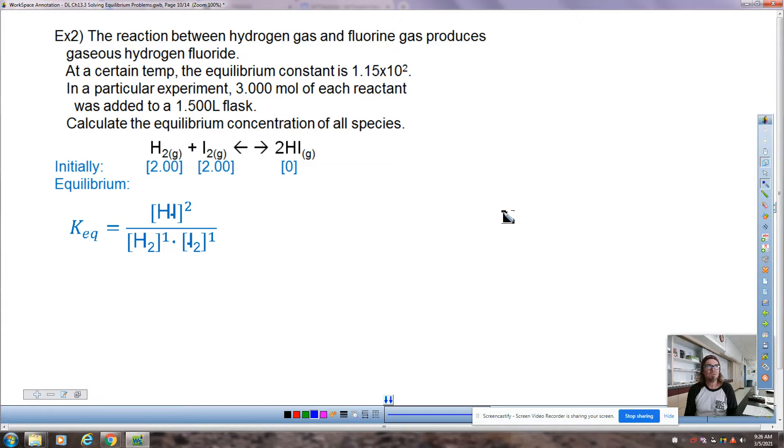Remember, pause this as you go because there's things here that are going to be kind of difficult, especially the math. Question number two, the reaction between hydrogen gas and fluorine gas produces gaseous hydrogen fluoride. At a certain temperature, the equilibrium constant is 1.15 times 10 to the second power. In a particular experiment, three moles are added to a 1.5 liter flask. So we take each of the two reactants. This is a 1.5 liter flask. If you've got three moles of a substance in there, three divided by 1.5 is how I got the twos. So two and two and zero.